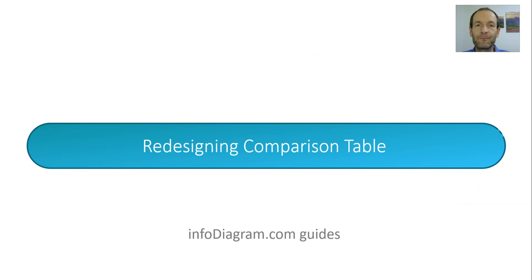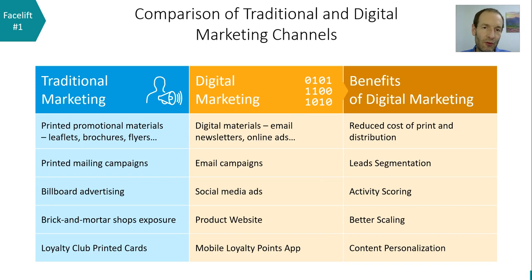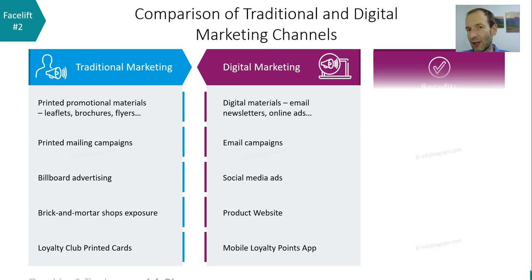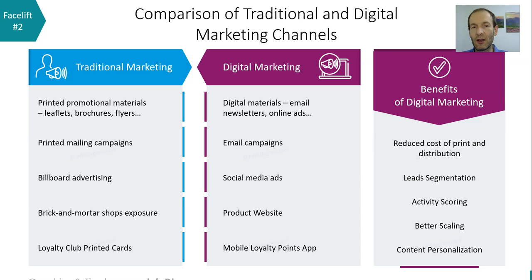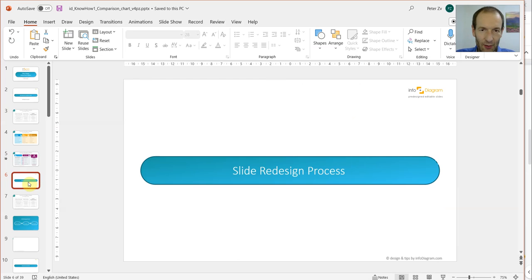This is the source slide which we have, and we'd like to change this default-looking table which is not very attractive and it's hard to see what's the most important here. For example, we could design it like this, or it could be another design — this kind of untypical comparison table. Let me show how this slide redesign process can look like.